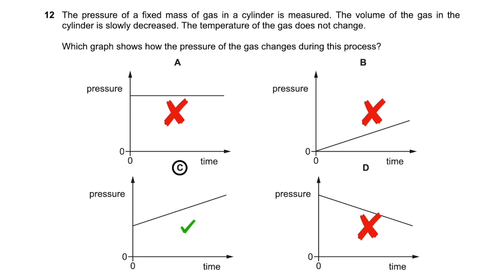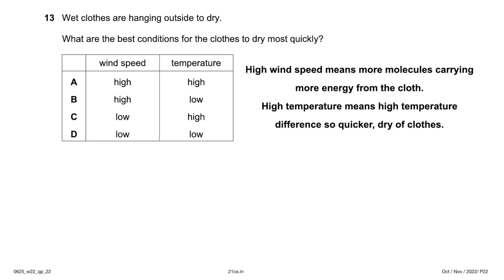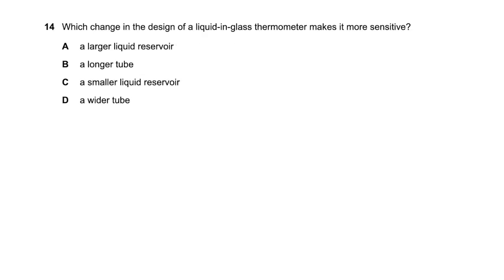Wet clothes are hanging outside to dry. What are the best conditions for drying most quickly? Temperature must be high — higher temperature means a greater temperature difference and faster evaporation. Wind speed also must be high, because faster wind carries energy away from the cloth more quickly. More molecules carry more energy away. Option A (high temperature, high wind speed) is correct.